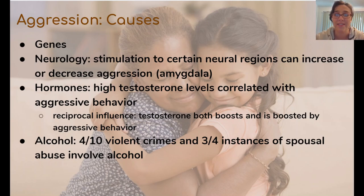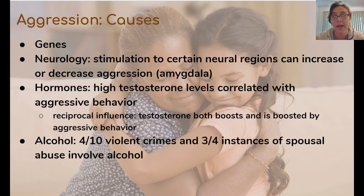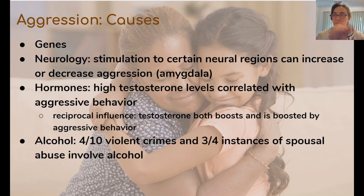Decreased stimulation to the amygdala decreases aggression. The amygdala is related to the fight-or-flight response, so it makes sense that neurological changes in amygdala stimulation influence how aggressive we feel. Aggression is also influenced by hormone levels — high testosterone is correlated with aggressive behavior, and they actually influence each other reciprocally. If a person behaves more aggressively, their body produces more testosterone, and more testosterone leads to more aggressive behavior. So testosterone boosts aggression and aggression boosts testosterone — they cyclically influence one another.